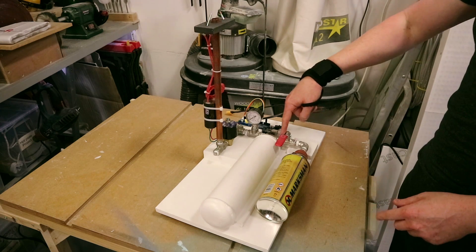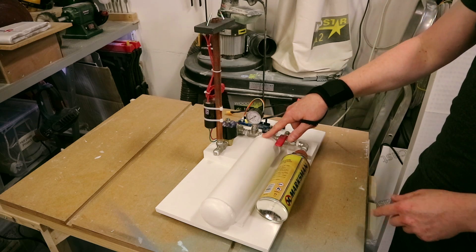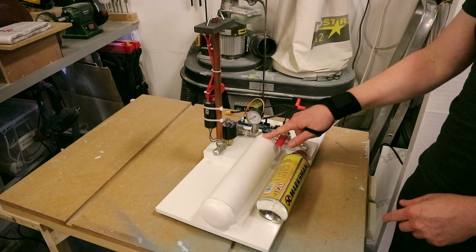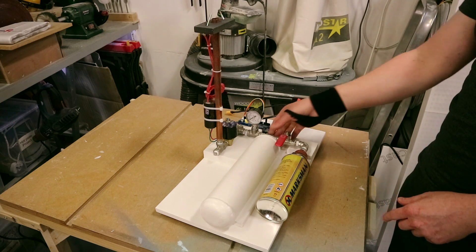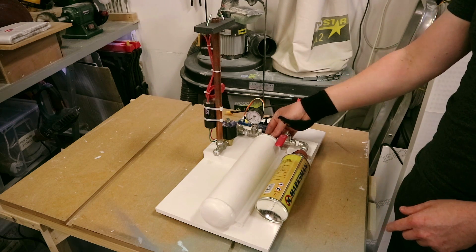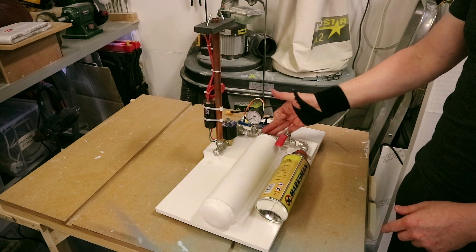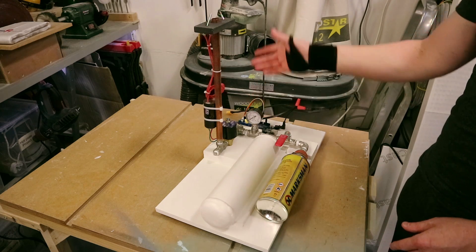That then runs through the valve into a buffer tank. This is an old welding gas tank which has been cleaned out and a proper useful thread put into it. And that then runs through to a pressure gauge so I can see where we are.